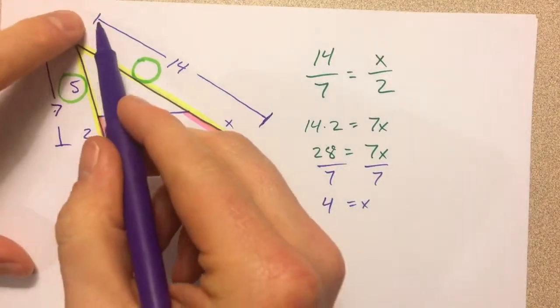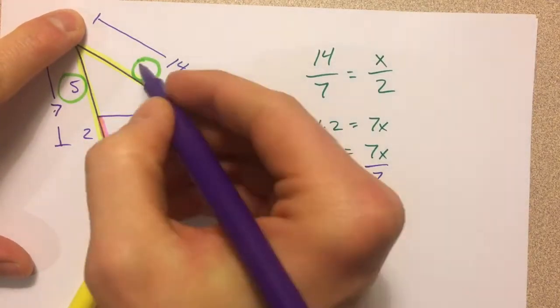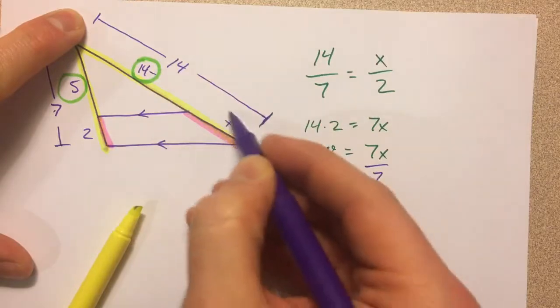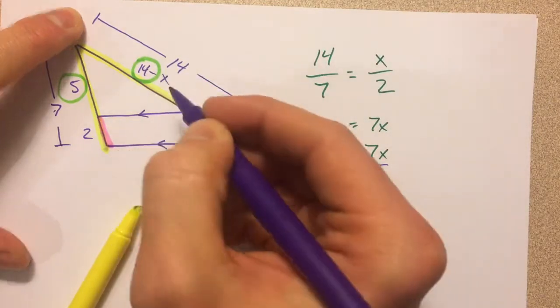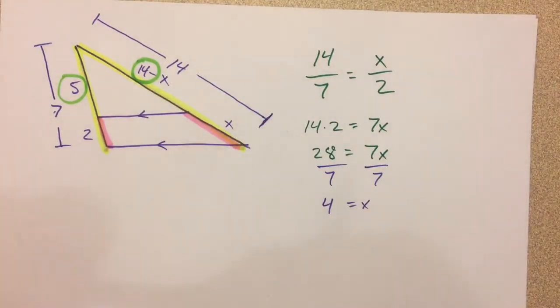we have to take our whole 14 and do 14 minus whatever this is right here. So we've got to subtract that, that x.